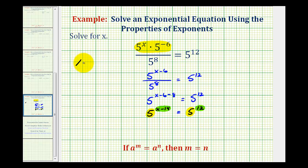So if x minus 14 must equal 12, then we could add 14 to both sides of the equation. And we have our solution x equals 26.